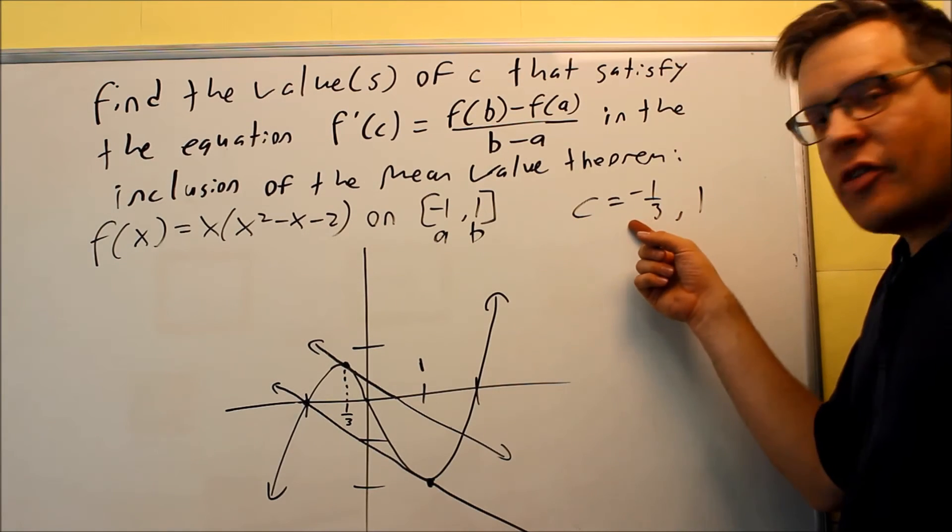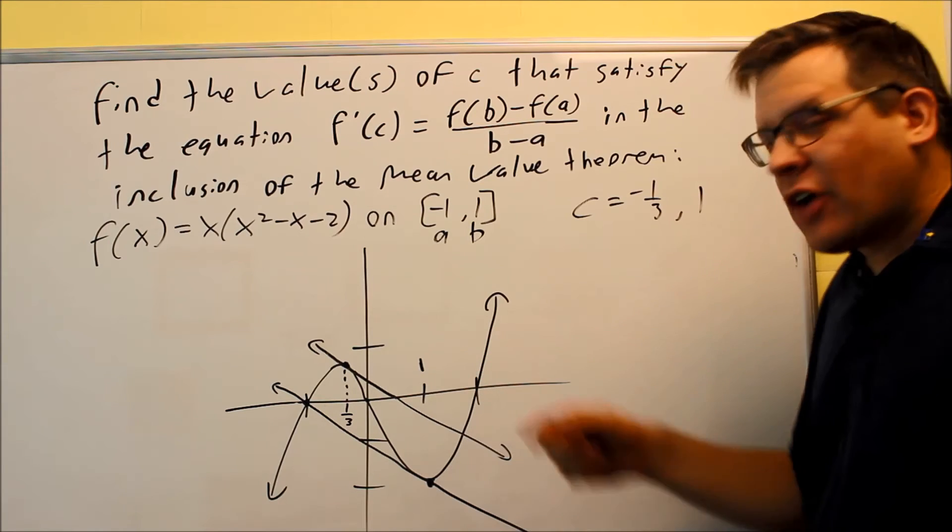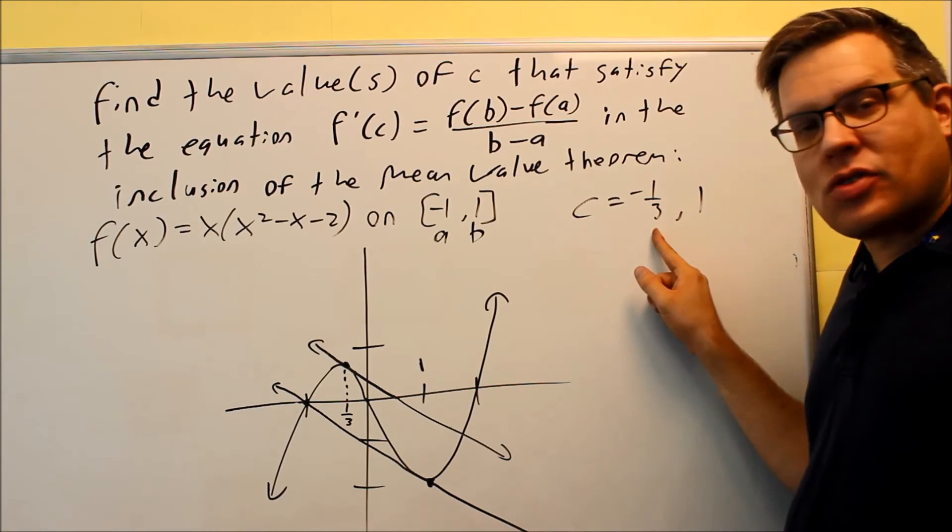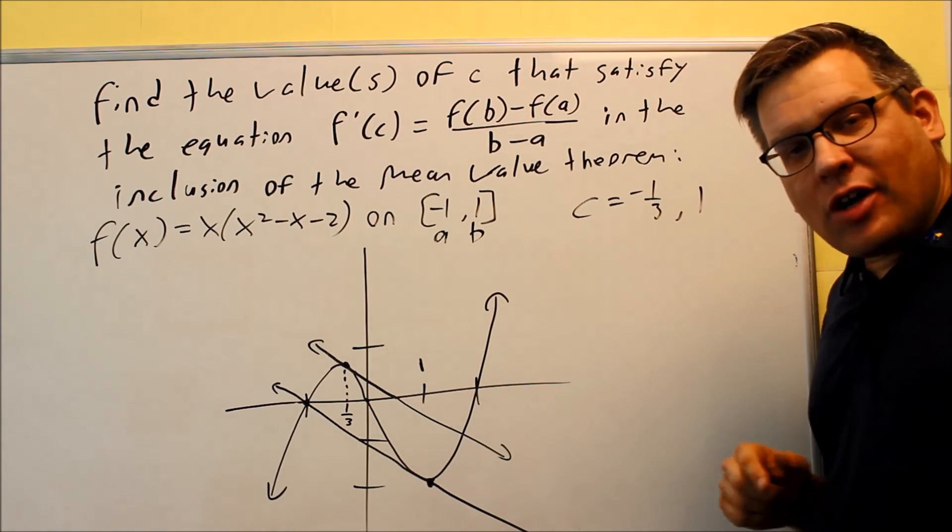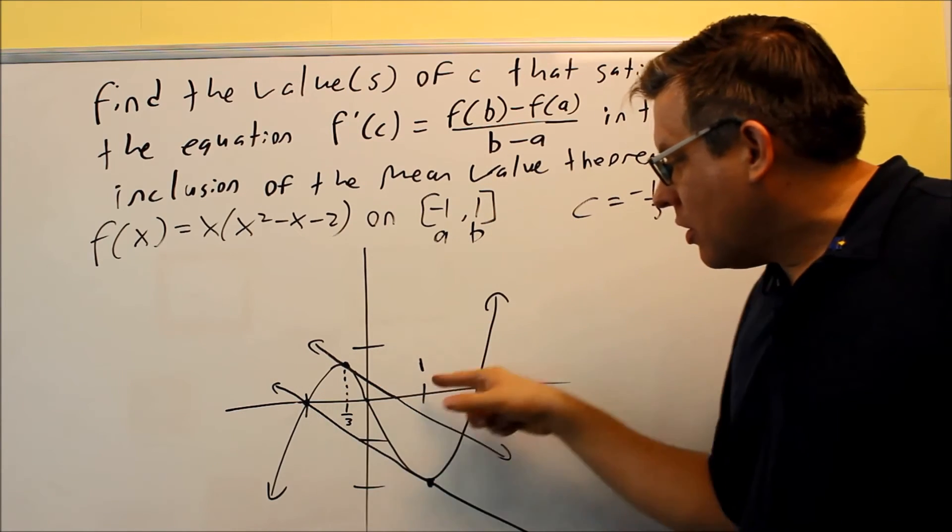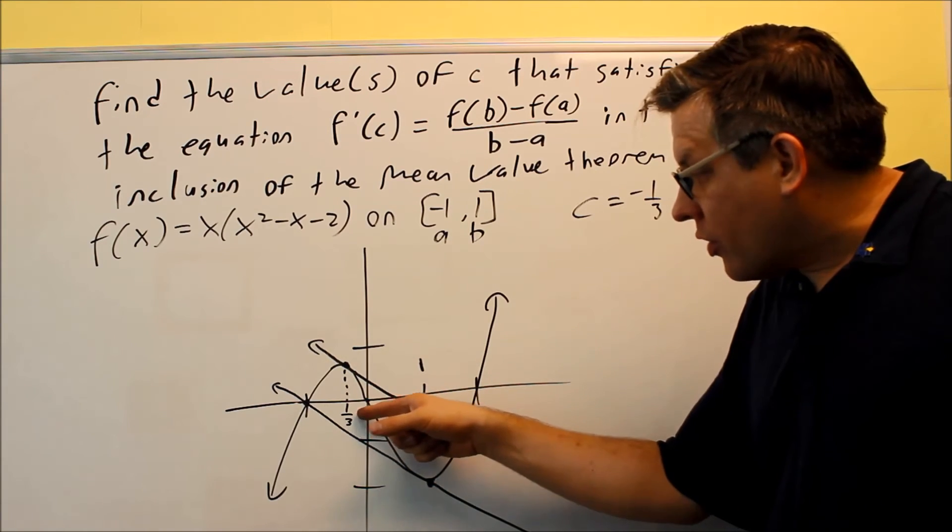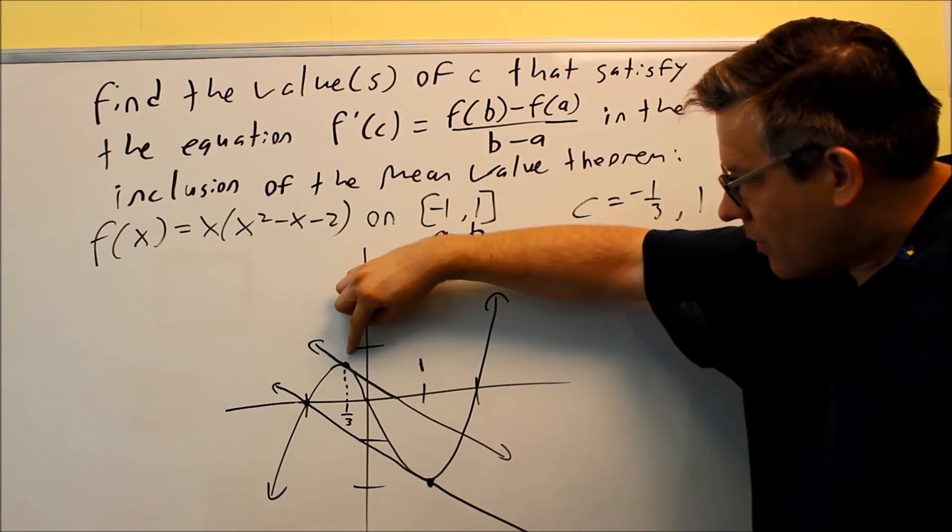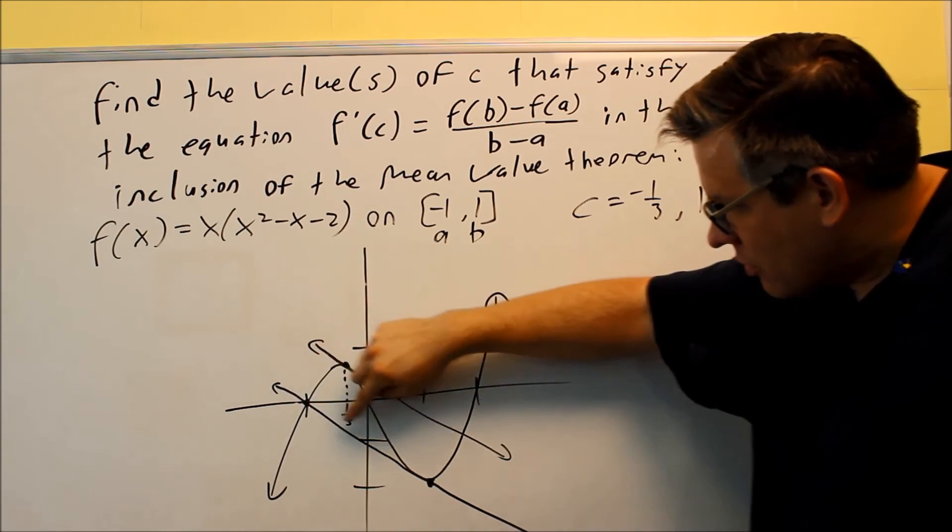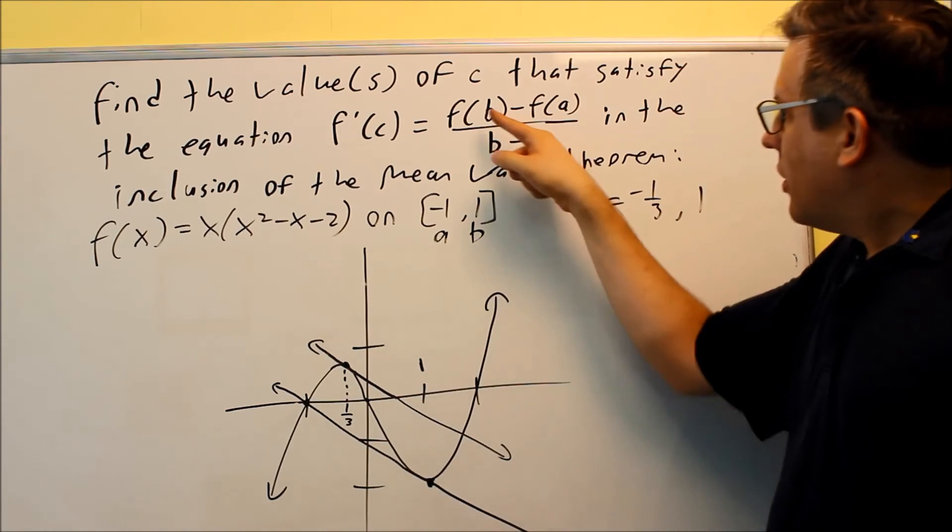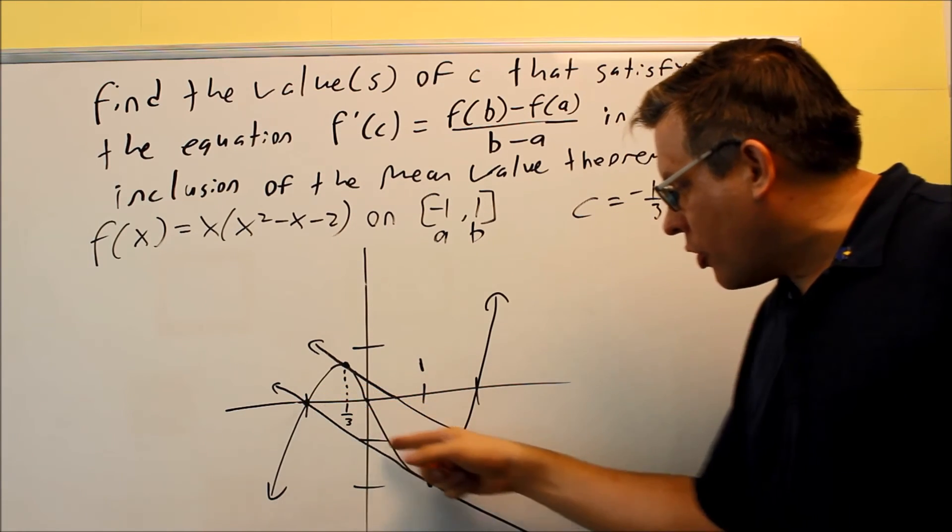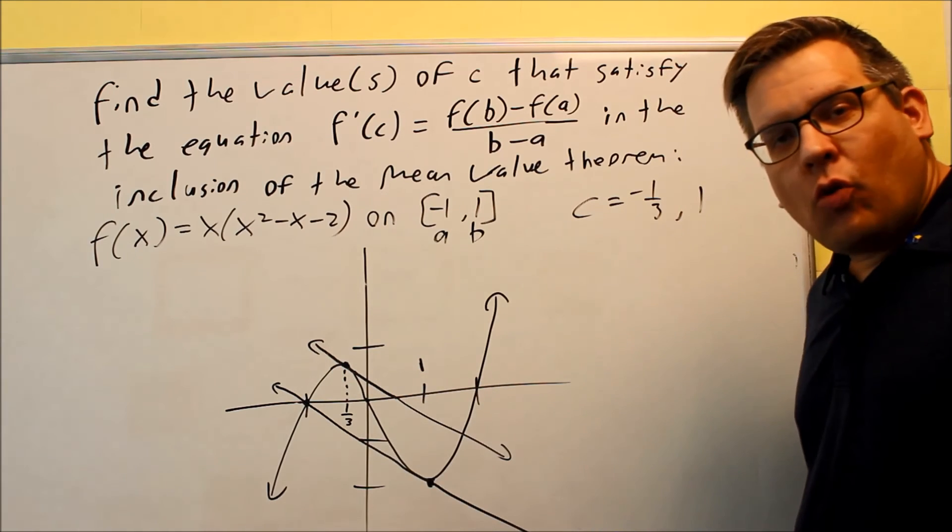Okay, so we've got negative 1 third and 1 as our answers. Here's what the graph would look like for this one. So I have the 1 third right here. That's my first C value. And I have 1 right here. Mean value theorem says that between negative 1 and 1, that's my original interval that I have there, the 1 third falls in between that. And we notice that the slope of the tangent line at the x value of 1 third here, that's exactly the same as the slope that goes through B and A on this. So we're doing F of B and F of A. We found both of those. The slope going through there matches the slope at 1 third.